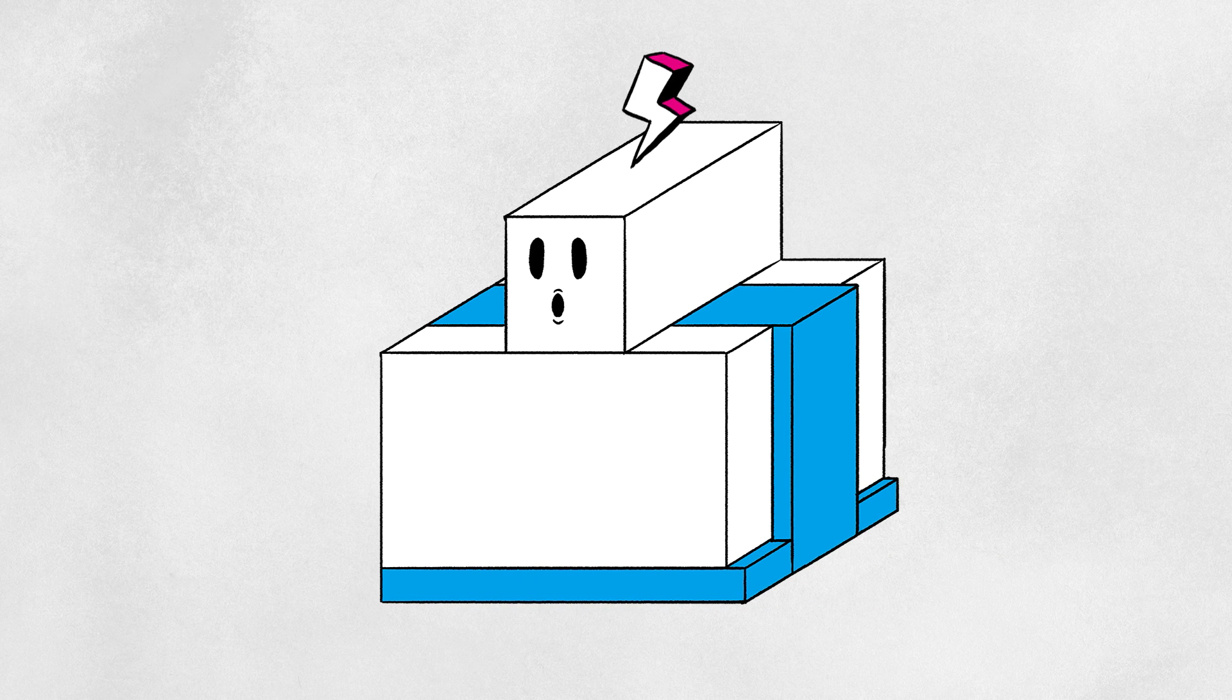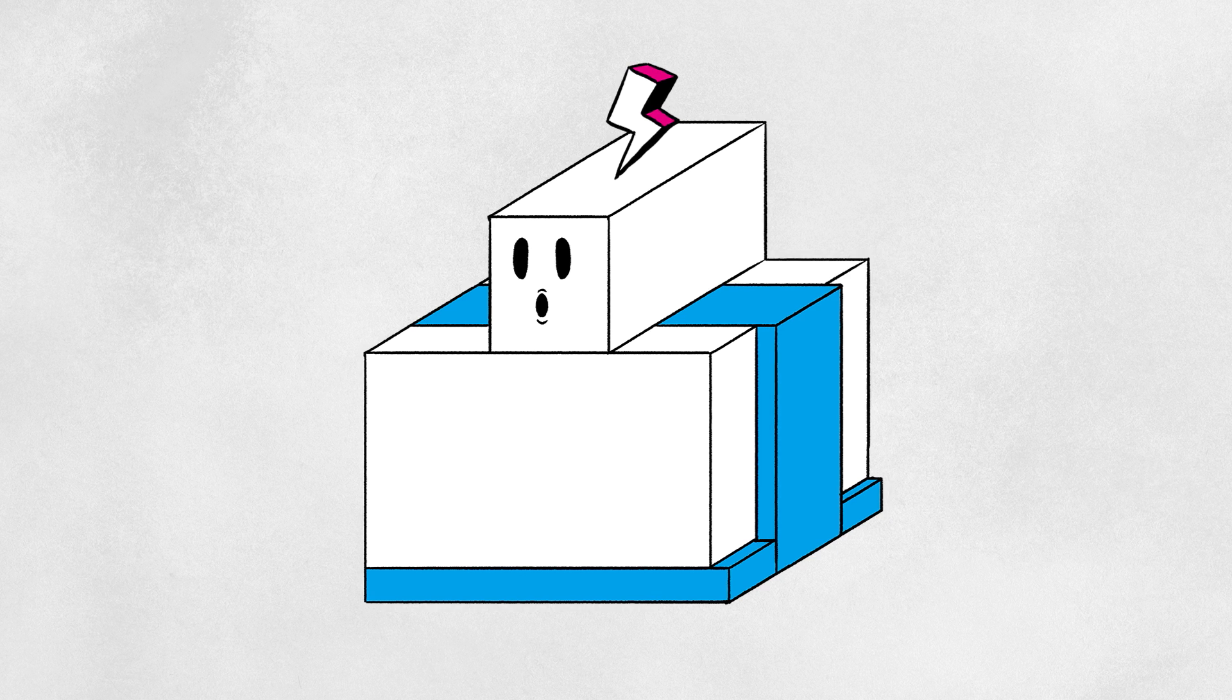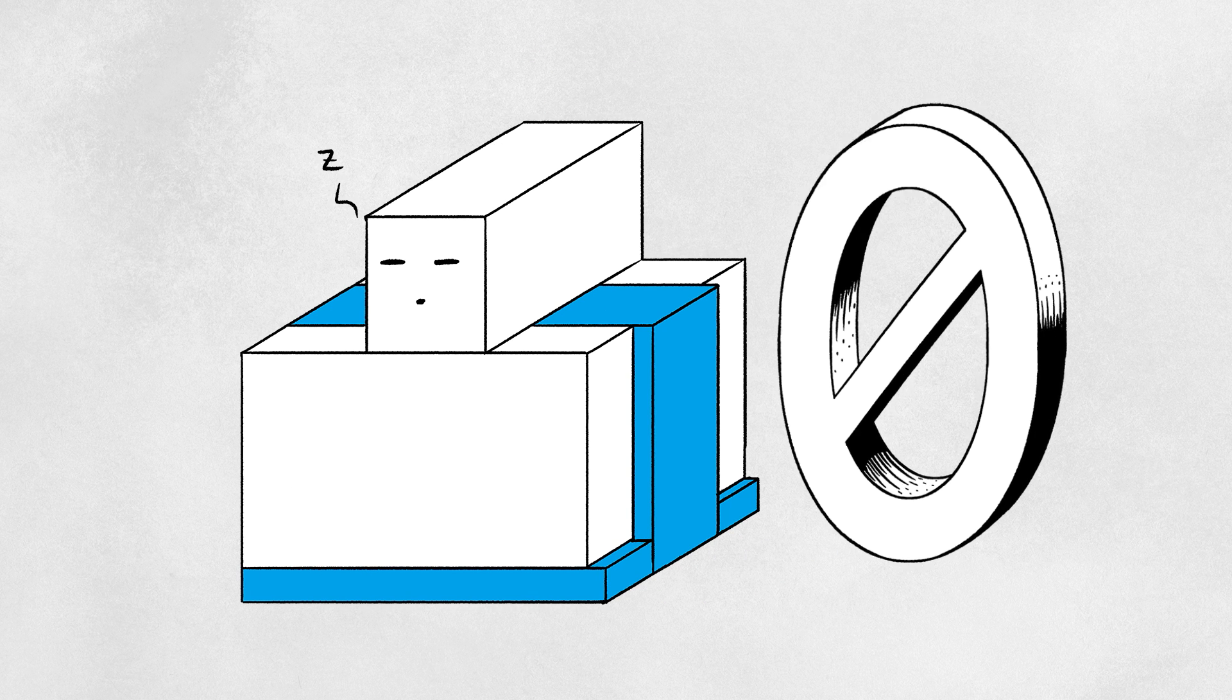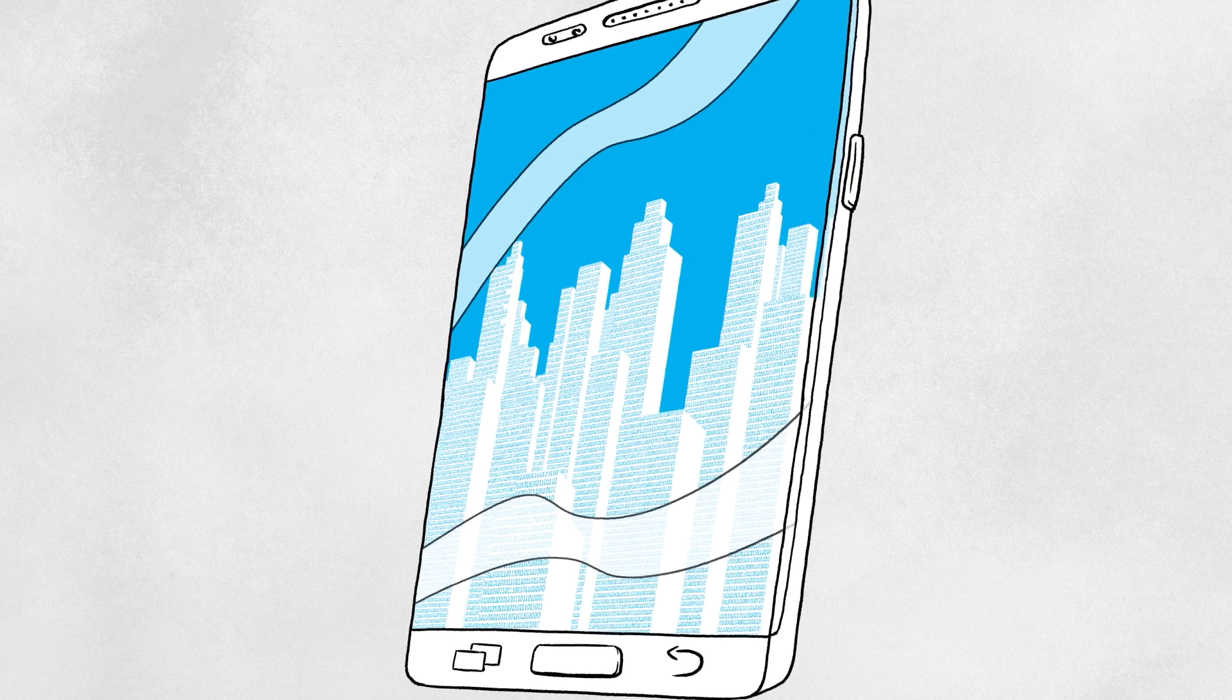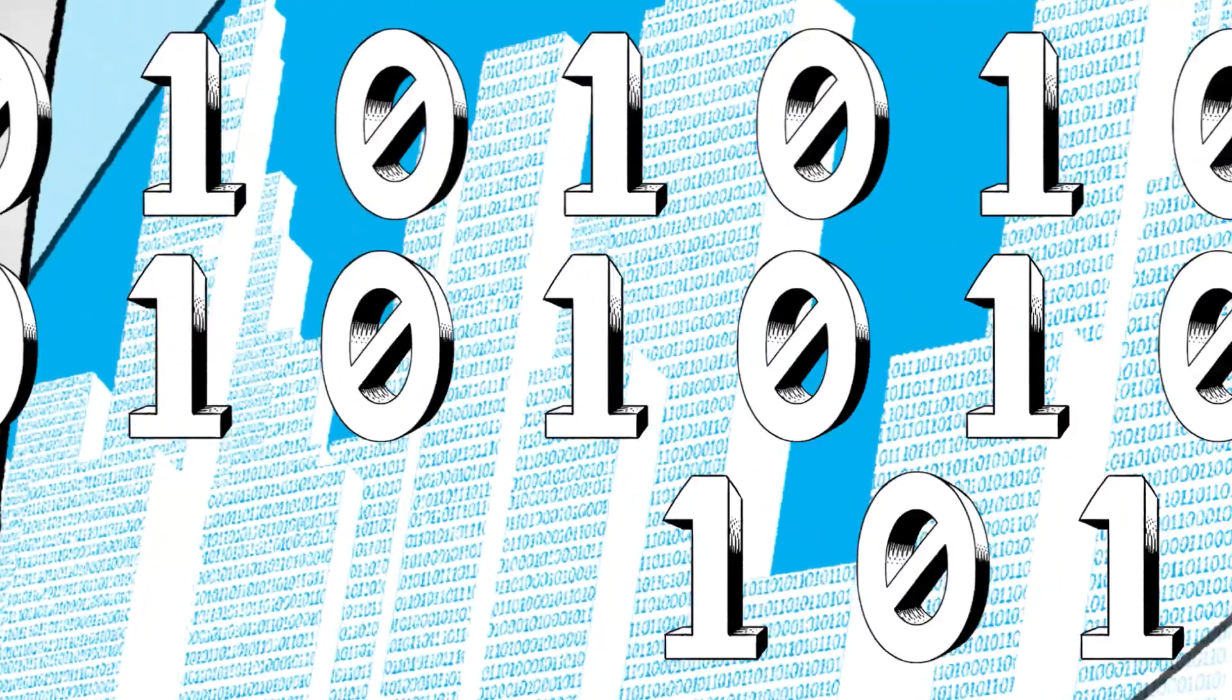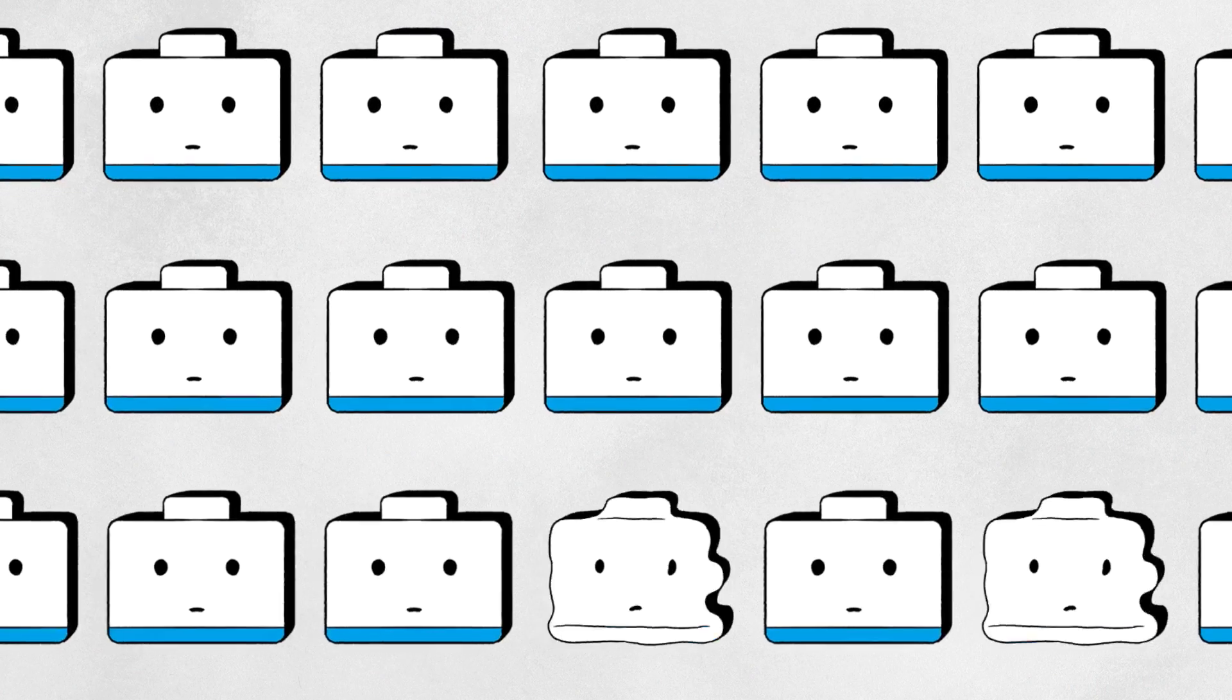If electricity is being passed through the gate of a transistor, it is recognized as 1, and if not, 0. Semiconductors process all kinds of information using binary numbers, the simple 0 and 1.